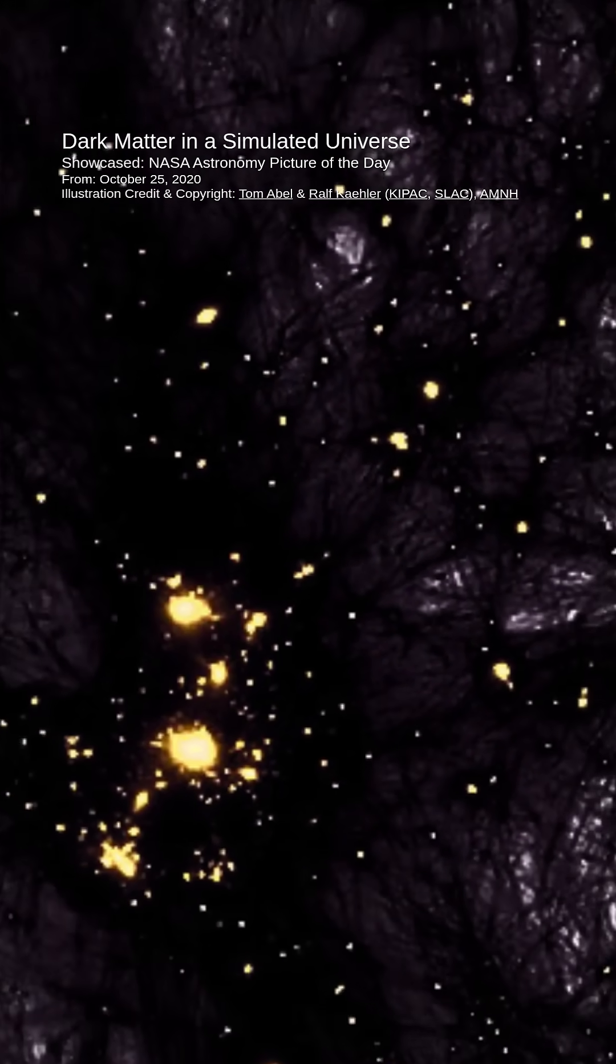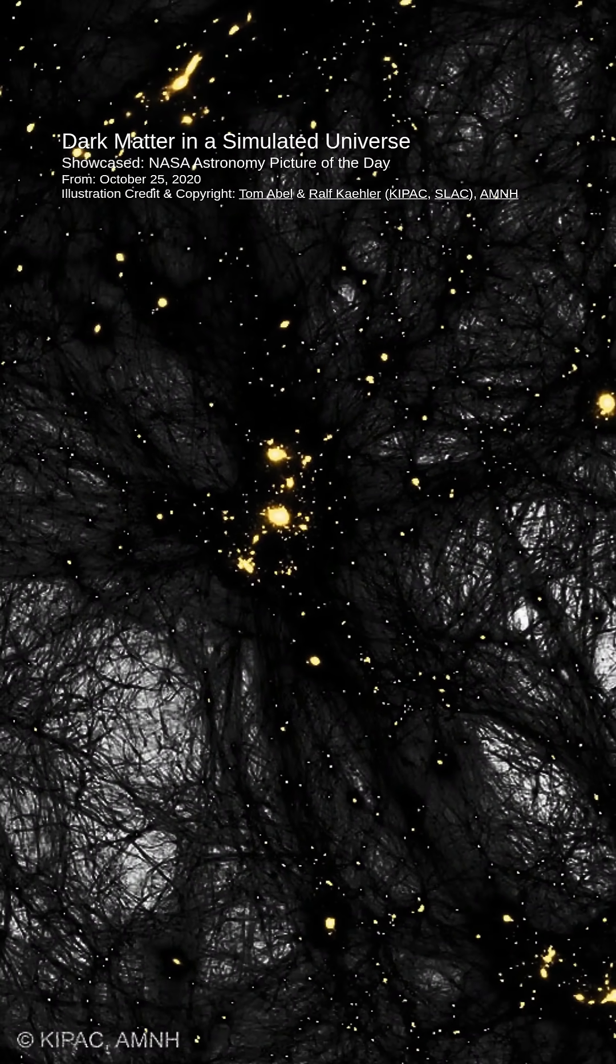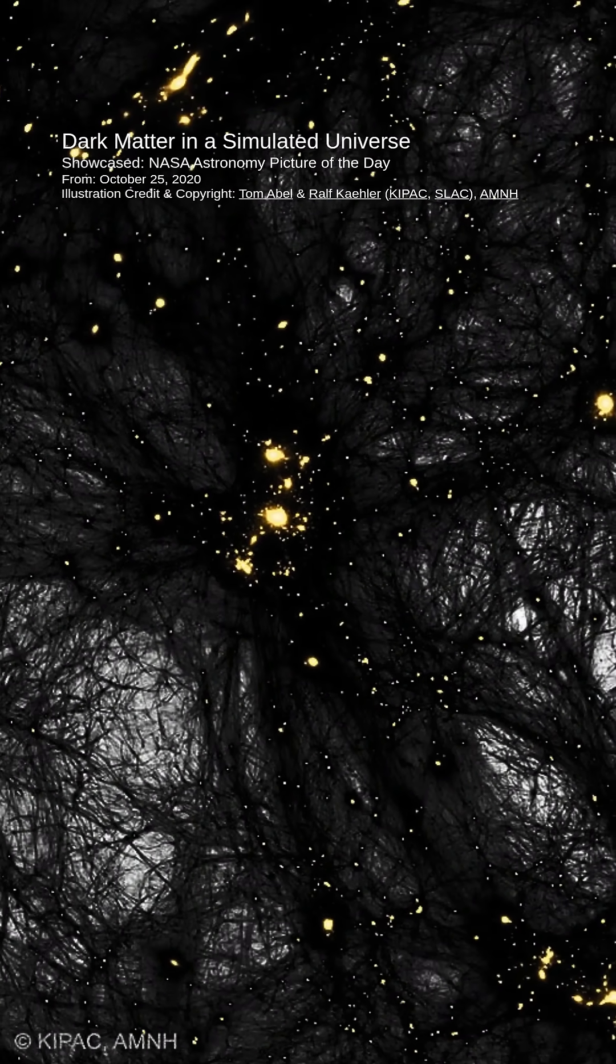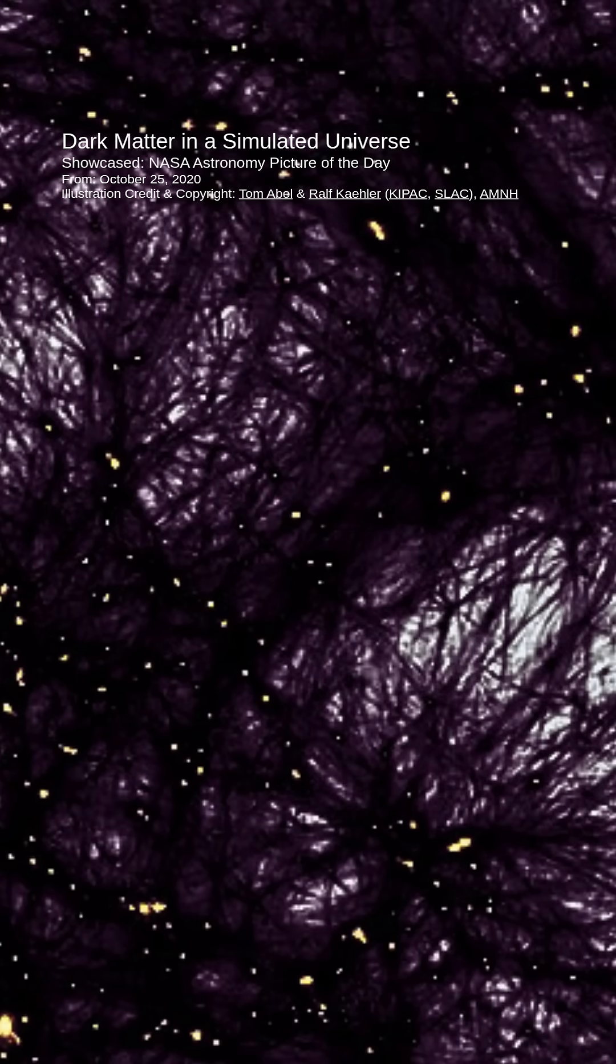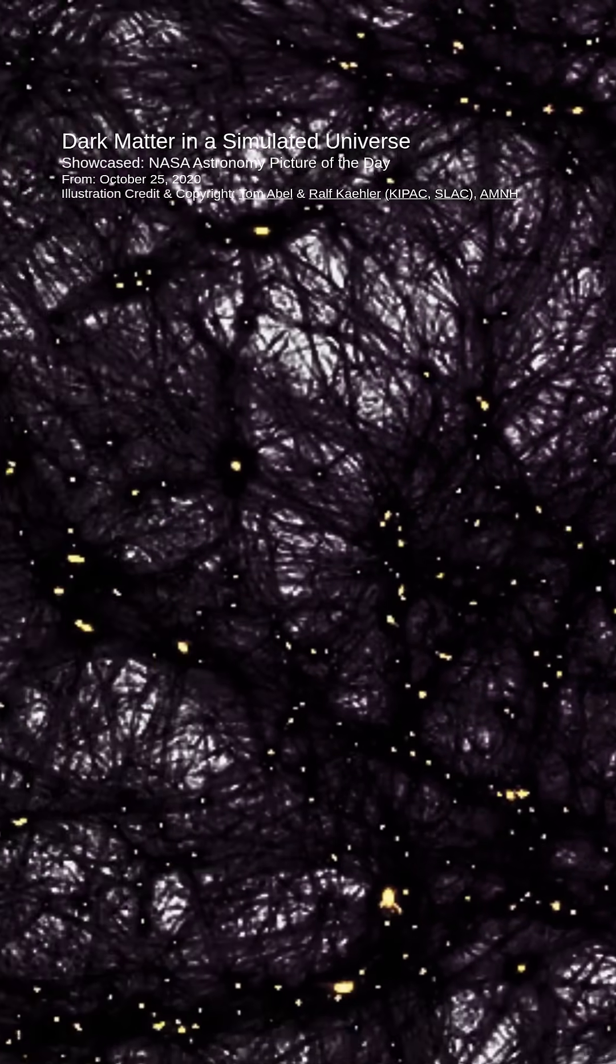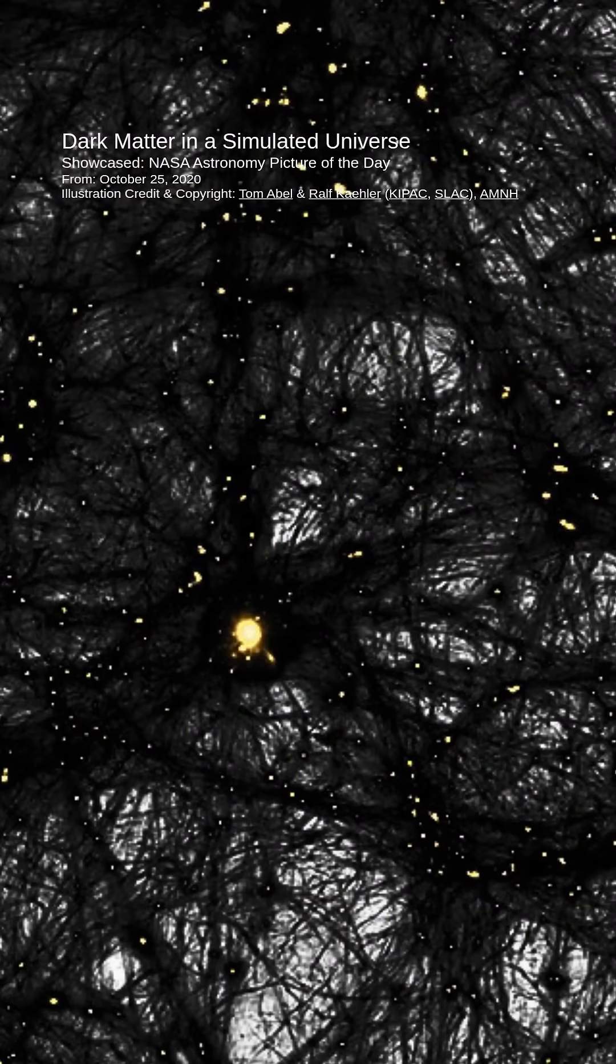In this frame from a detailed computer simulation, complex filaments of dark matter, shown in black, were strewn about the universe like spiderwebs, while the relatively rare clumps of familiar baryonic matter were colored orange. These simulations were good statistical matches to astronomical observations.